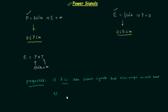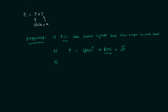The second property relates average power to the RMS value. Average power equals the square of the RMS value, meaning power is the mean of squared values, so the RMS value equals the square root of average power. The third property concerns the modulus in the power formula: if two signals x(t) and y(t) have different waveforms but the same waveform after taking the modulus, then their average powers are equal.